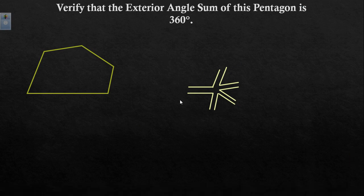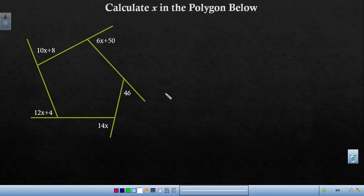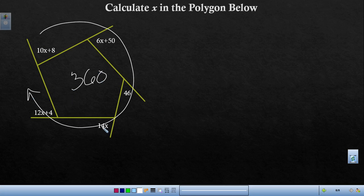We find out then that the exterior angle sum for any shape is 360 degrees. So it's 360 degrees around the outside if I add up all the angles.